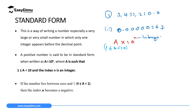If we write the first number, 3,433,210, in standard form, it will appear as 3.433210. To get the decimal point after the 3, we moved backward from the original point 1, 2, 3, 4, 5, 6 places. When you move to the left, the power is positive. So it is 3.433210 times 10 raised to power 6. An index without a sign is a positive index.